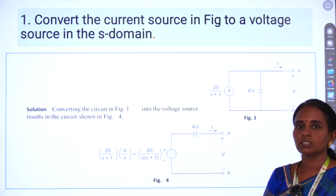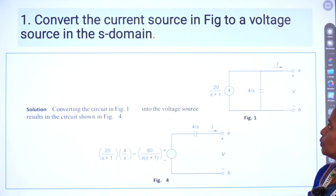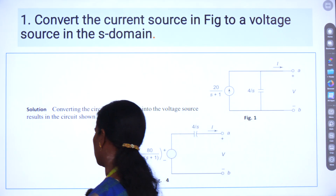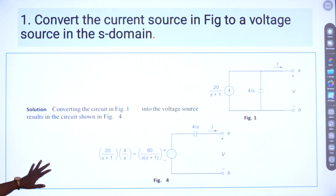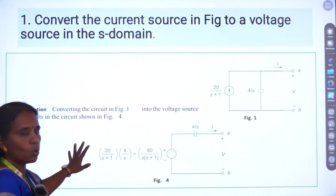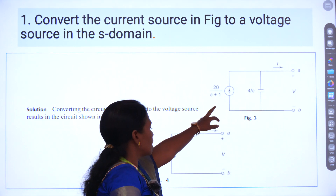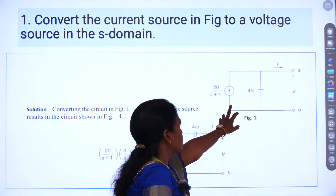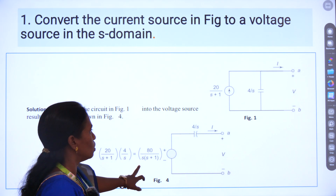We will start with a simple problem: convert the current source in the figure shown here to a voltage source in the S domain. This is a basic conversion. Initially, you can see the circuit here — we have a current source and a capacitor that we need to convert into a voltage source.